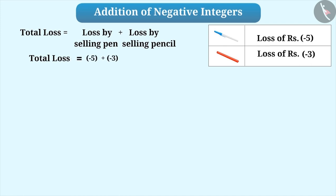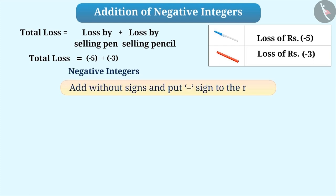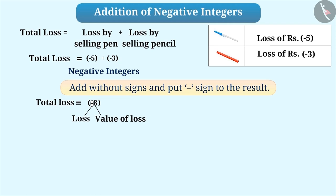As you can see here, both are negative integers. For addition of any two negative integers, we add them without signs and then prefix the result with a negative sign. Using this method, addition of -5 and -3 without signs will result in 8. Then, we get the total loss, that is the value of -5 + -3, by prefixing a minus sign to it, that is -8. Here, the minus sign represents loss and the number represents the value of loss.